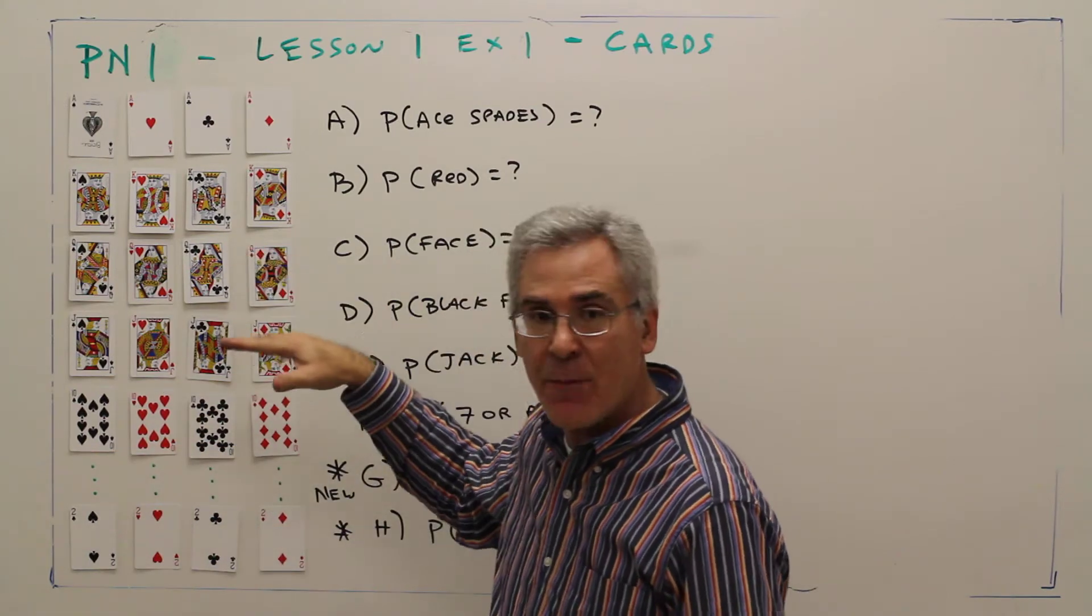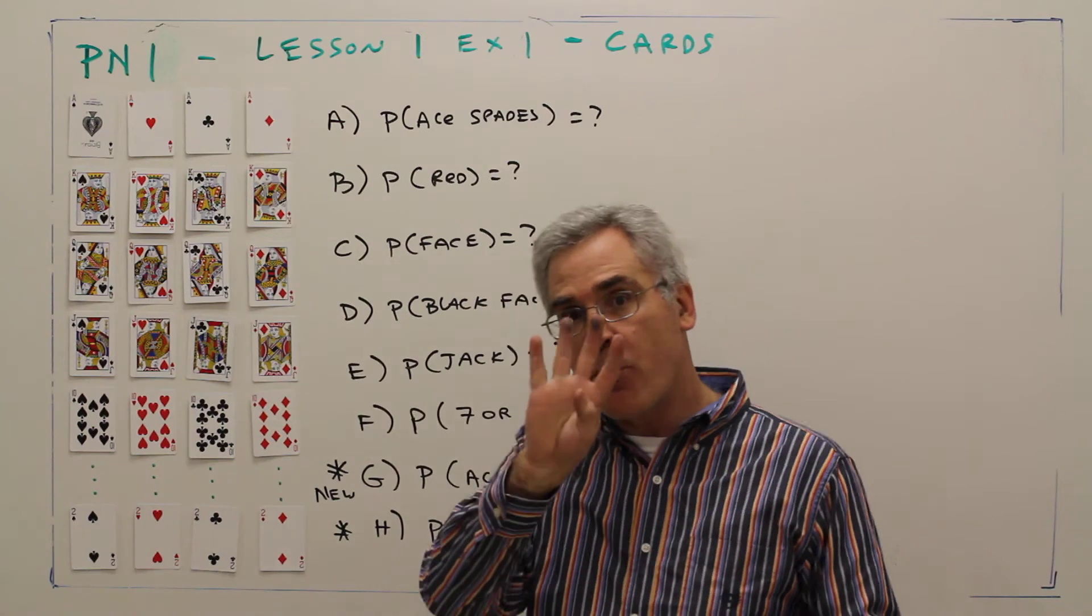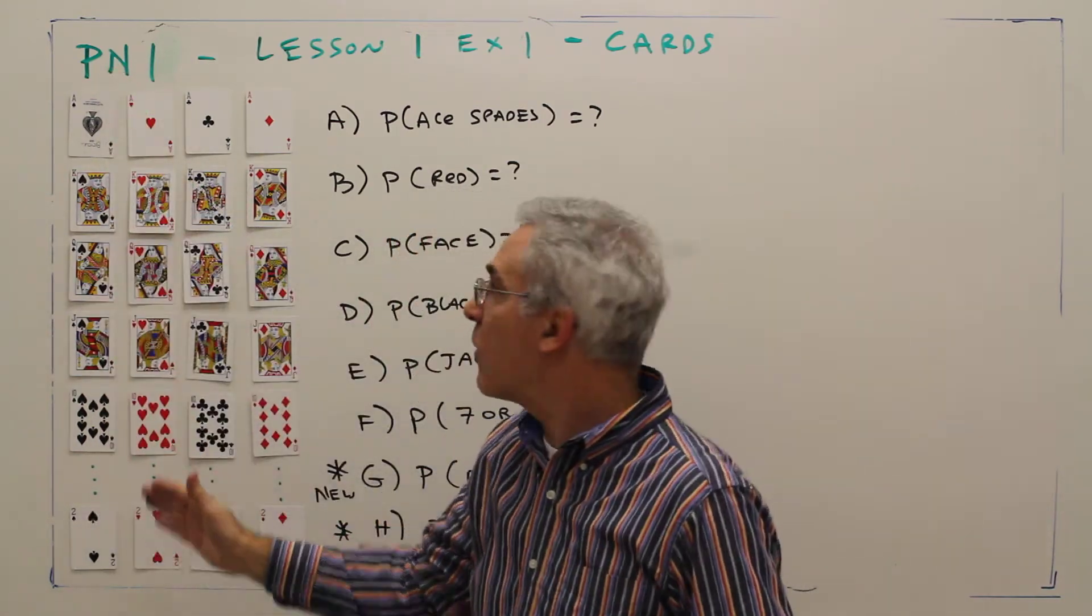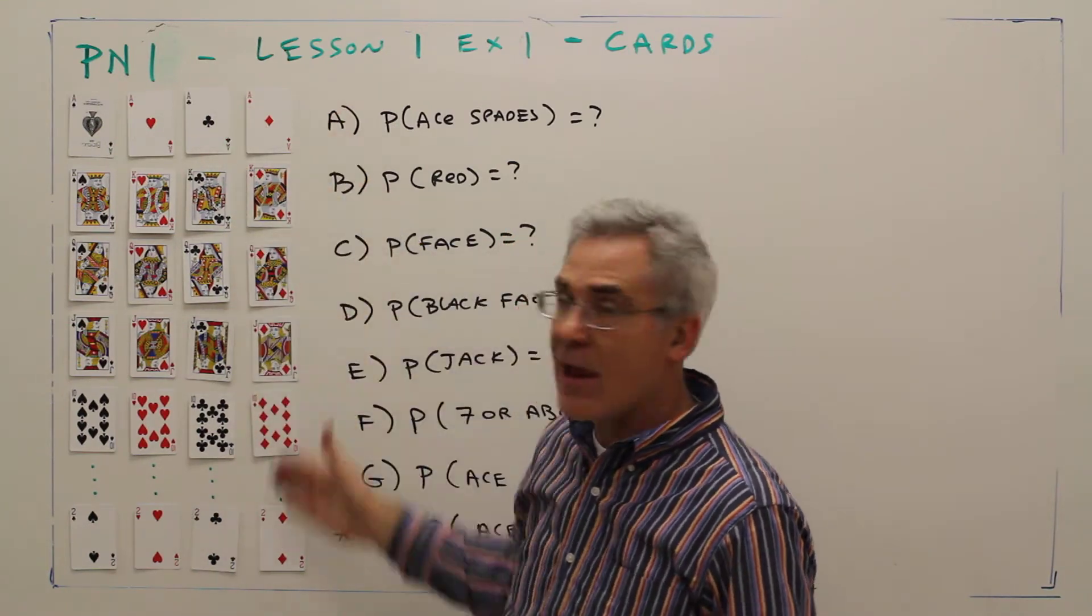There's 13 different denominations, or ranks, twos through aces. There are four suits: spades, hearts, clubs, and diamonds.